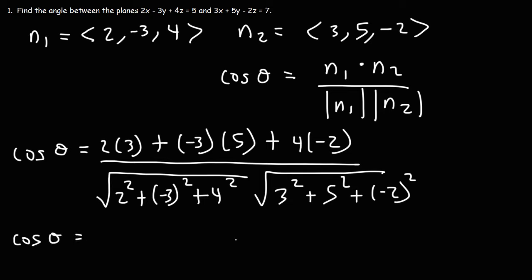So now let's do the math. 2 times 3 is 6. Negative 3 times 5 is negative 15. And then 4 times negative 2 is negative 8. On the bottom, we have 2 squared, which is 4. 3 squared is 9. 4 squared is 16. And then 3 squared is 9. 5 squared is 25. Negative 2 squared is 4.